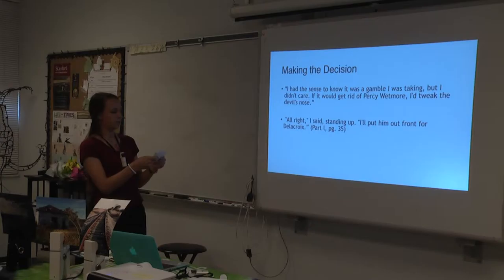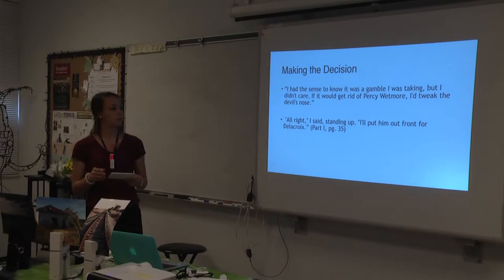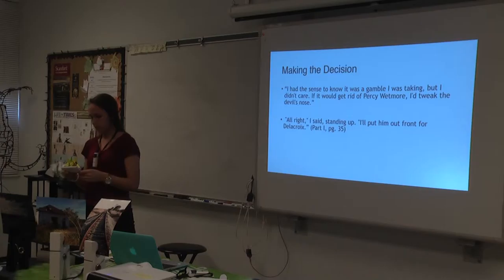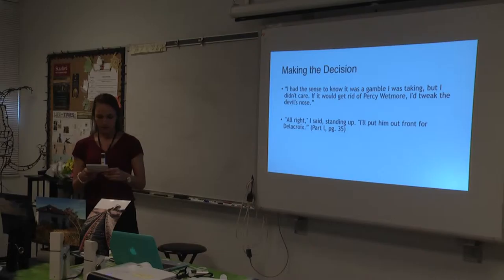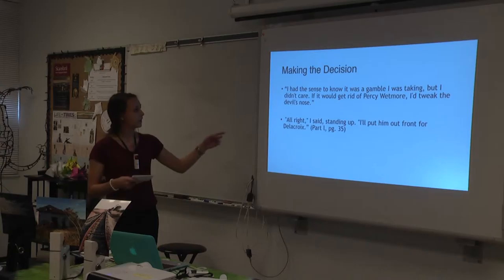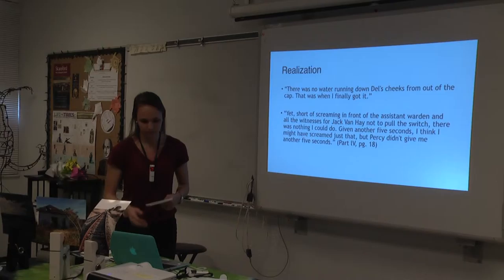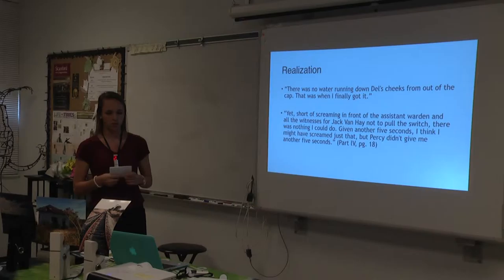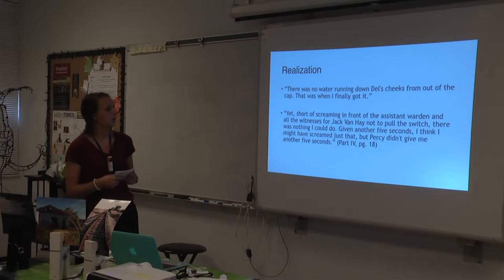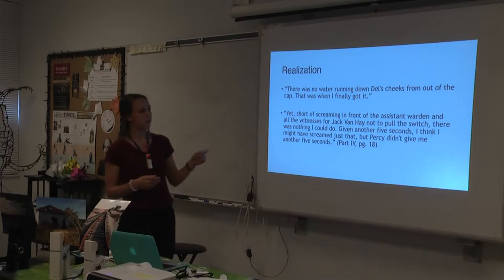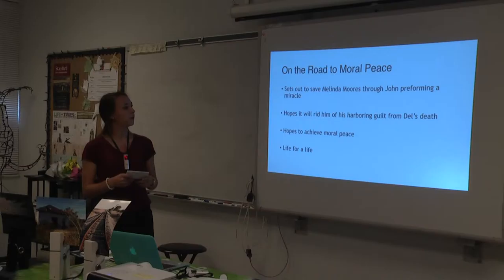This excerpt is from when Paul was talking to Hal Morse about letting Percy be out front for the execution. Paul knows it is very risky and chooses to do it anyway for his own benefit — this shows the crossroads he faces. He figures Del will die either way, so why not let Percy do it. He says, 'Alright, I'll put him out in front,' so he has decided. Then comes the realization that Del's execution went wrong: there was no water running down Del's cheeks, and Percy had not given him enough time to stop it.